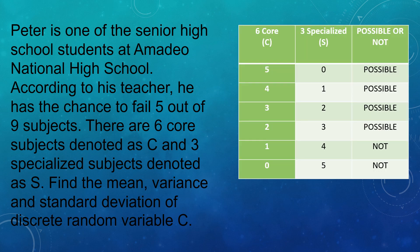You already know how to do this table. We have 6 core subjects and 3 specialized subjects. Since he has the chance to fail 5 out of 9 subjects, we have pairs: 5 and 0, 4 and 1, 3 and 2, 2 and 3, 1 and 4, and 0 and 5. To decide if each pair is possible: 5 and 0 is possible because 5 doesn't exceed 6 and 0 doesn't exceed 3. Similarly, 4 and 1, 3 and 2, and 2 and 3 are possible. However, 1 and 4 is not possible because 4 exceeds the 3 specialized subjects available.